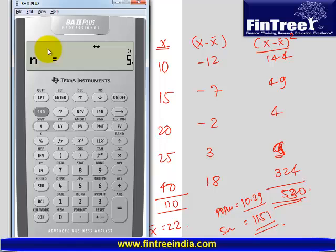It is showing you n is equal to 5, which means there are 5 values that we have inserted. X bar is 22, the mean of this data set is 22. Downward arrow.